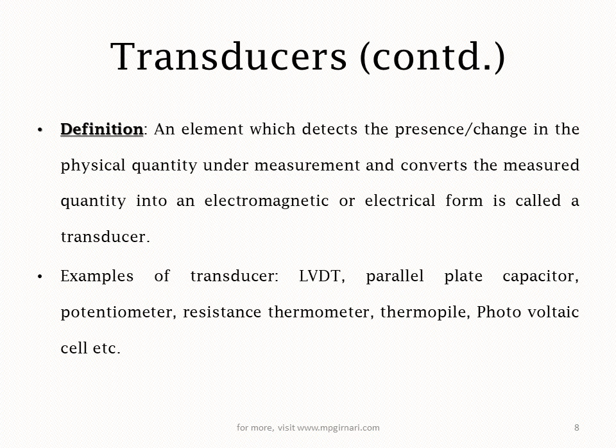Ab yeh hai uski formal definition — agar exam mein poocha jaata hai ki define transducer, toh uski formal definition yeh hai: an element which detects the presence or change in the physical quantity under measurement. Yeh jo part hai woh sensor aur transducer mein common hai. Aur usme jo difference hai woh yeh hai ki it converts the measured quantity into an electromagnetic or electrical form — and so that's why it's called a transducer.